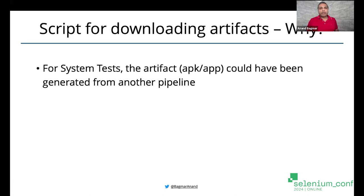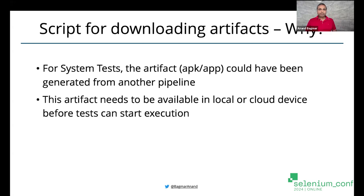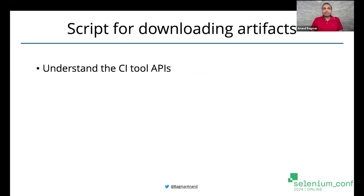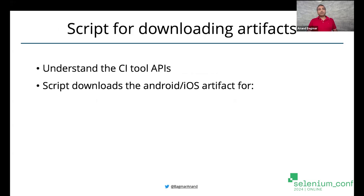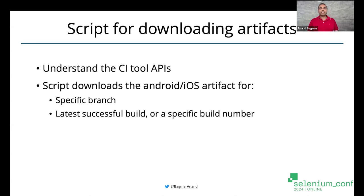But if your tests are running as a separate pipeline or a separate activity, then you first need to fetch the artifact generated from the other pipeline. This artifact needs to be available on local machine if your tests are going to run against a local device. Or if you are running the test against a device in the device farm, you need to upload this artifact to the cloud farm before you are able to run the test. I implemented a simple script — based on what CI APIs are available, you can easily write a script to fetch the latest artifact based on a specific branch, the last successful build, or a specific build number.